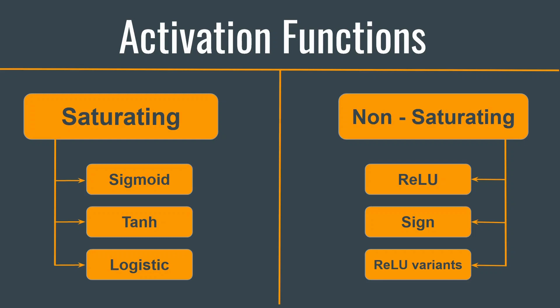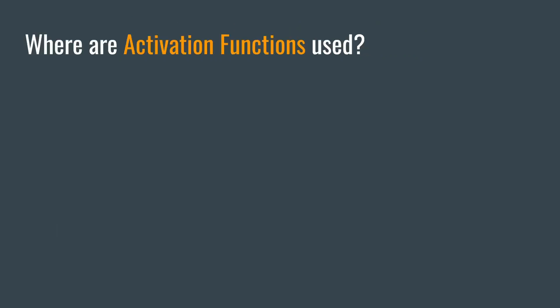But the question comes, where are these activation functions used? Well, each activation function is applied to the outputs of each neuron present in a hidden or output layer. You heard right, only the hidden and the output layer. Activation function is never applied on the input layer.